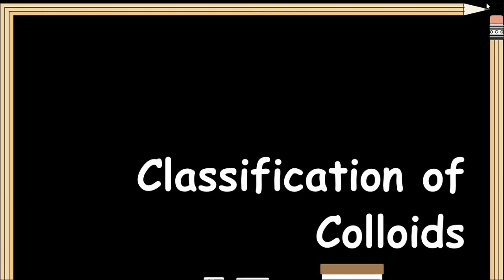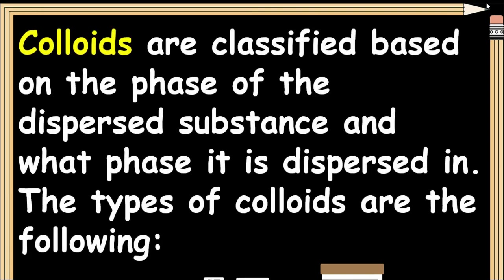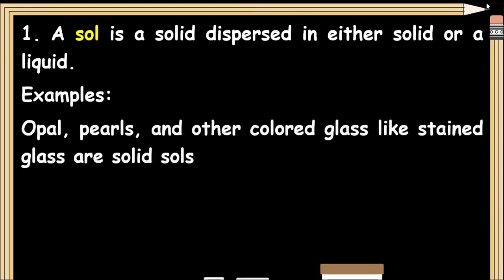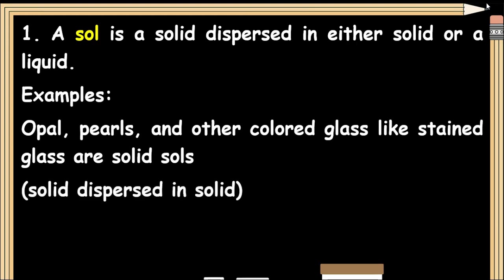Classification of colloids: Colloids are classified based on the phase of the dispersed substance and what phase it is dispersed in. A sol is a solid dispersed in either a solid or a liquid. Examples include opal, pearls, and colored glass like stained glass, which are solid sols — solid dispersed in solid.